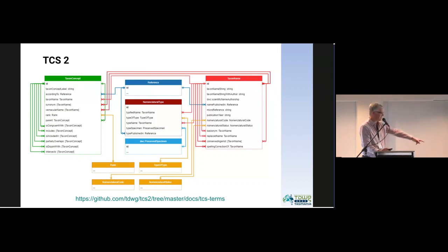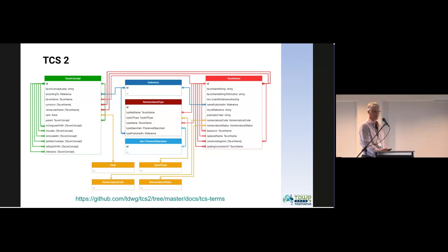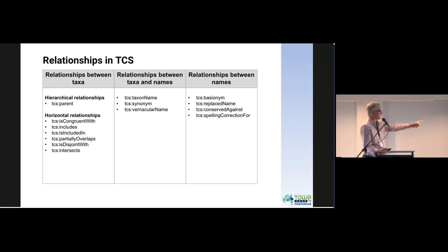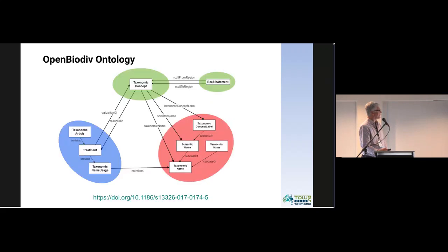The link below is the term list we have — the term list is ready. I had hoped to have TCS in public review by this conference but didn't quite make it; we hope to get there by the end of the year. TCS hangs completely together through relationships, as you can see from all the arrows in the diagram. There are three types of relationships within TCS: relationships within taxa, relationships between taxa and names, and relationships between names.